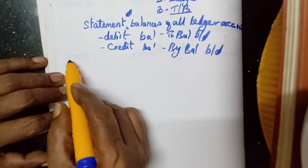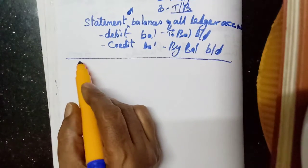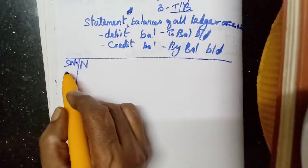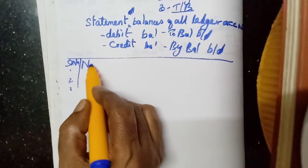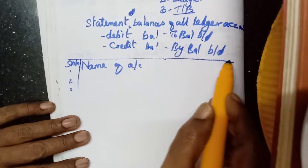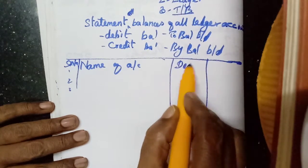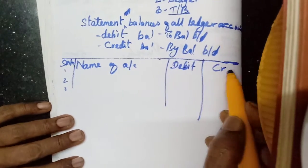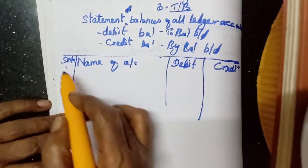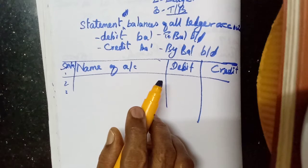The format of trial balance includes: first, serial number; second, name of account; then debit and credit columns — DR and CR. They will also show the LF, which is the ledger number — the page number where it is written in the ledger.